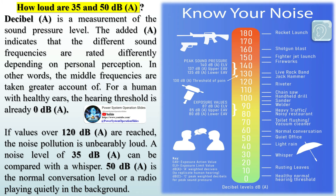How loud are 35 and 50 dBA? A decibel A (dBA) is a measurement of the sound pressure level. The added 'A' indicates that the different sound frequencies are rated differently depending on personal perception — the middle frequencies are taken greater account of. For a human with healthy ears, the hearing threshold is already 0 dBA.